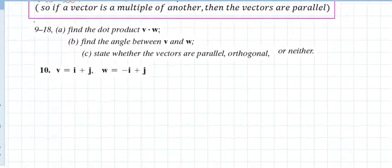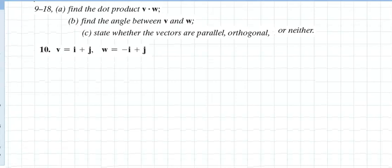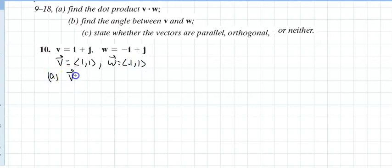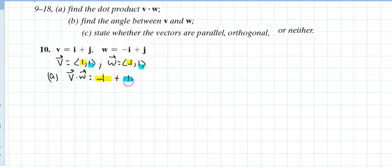This section asks for three things and is actually a short, easy section. For problem (a), given v = (1, 1) and w = (−1, 1), find the dot product: v dot w equals 1 times (−1) plus 1 times 1, which is −1 plus 1, giving zero.